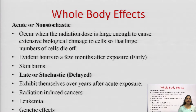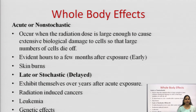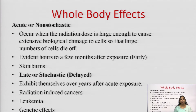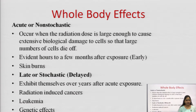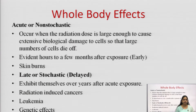Late or stochastic effects are also known as delayed effects. In delayed effects, suppose a person has had acute exposure — over a long period of time, the radiation can cause cancer, leukemia (blood cancer), and can also lead to genetic effects.